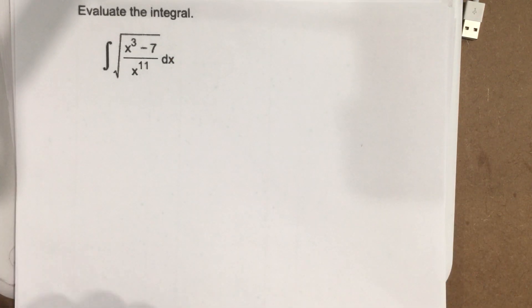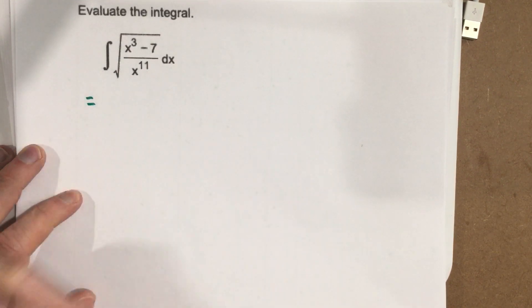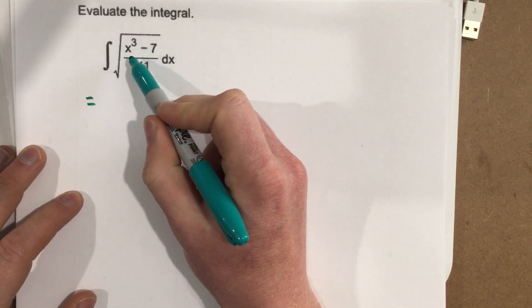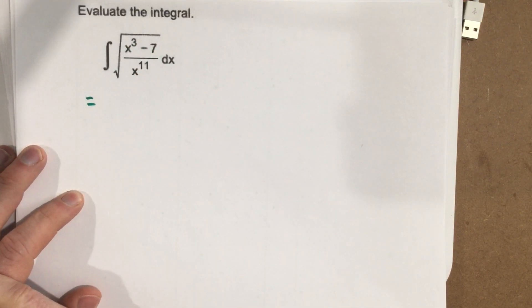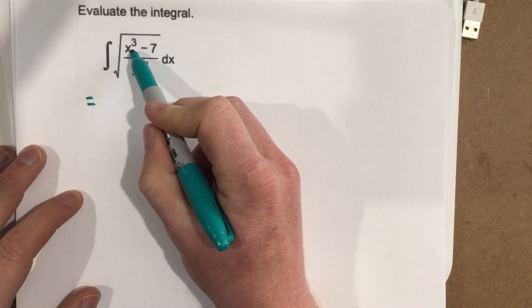So actually, in this problem, the first thing we need to do is we need to start to do some simplifications to see if we can get this root to look a little nicer so that we can do a u substitution. Well, if you notice, x to the 11th has an x to the third in it.